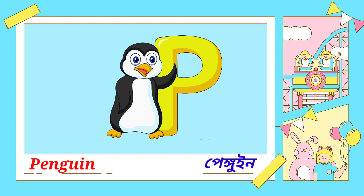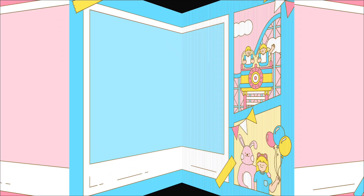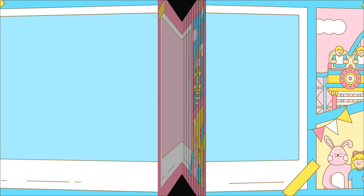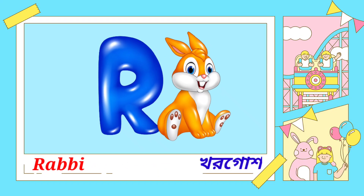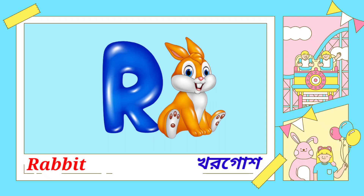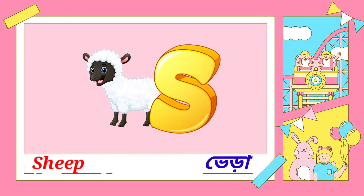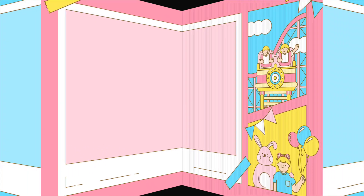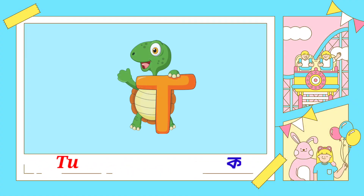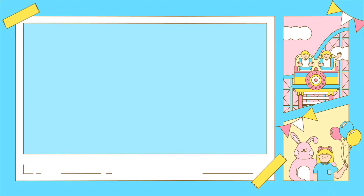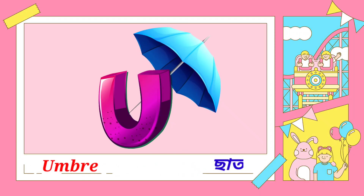Penguin means penguin. Q for who. R for rabbit, rabbit. S for sheep. T for turtle. U for umbrella.